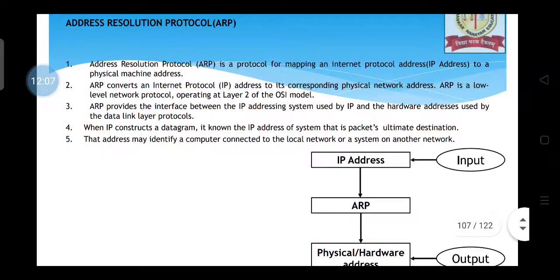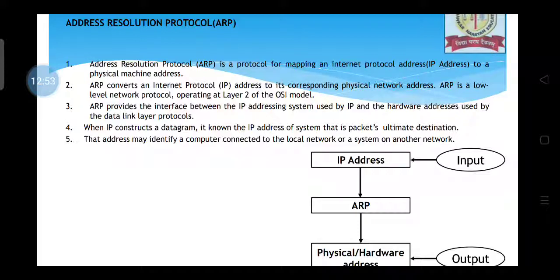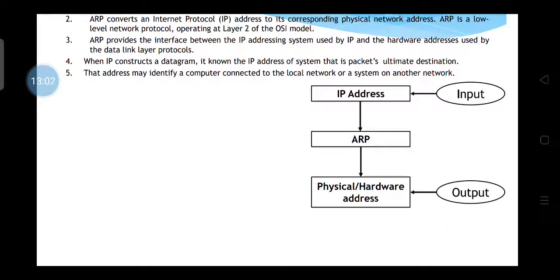Regarding Address Resolution Protocol (ARP): any device has a logical address — the IP address — as well as a physical address. For example, a PC might have the logical address 192.168.0.1 and be located in Mumbai, which is a physical location. ARP converts the logical IP address to the physical network address. It provides the interface between the IP addressing system and the hardware address used by data link layer protocols, functioning at layer 2.